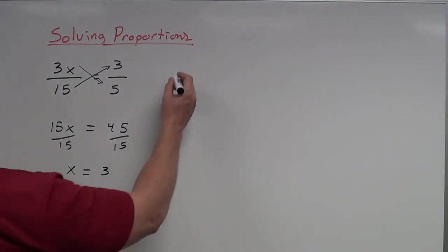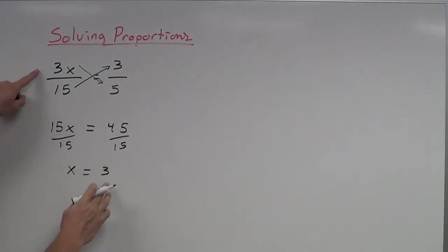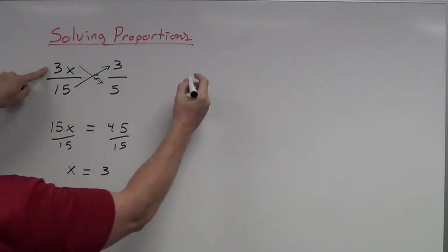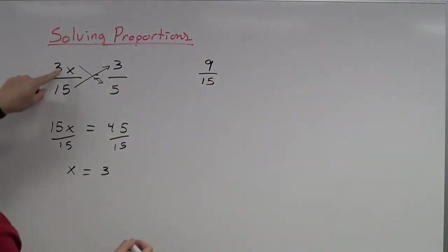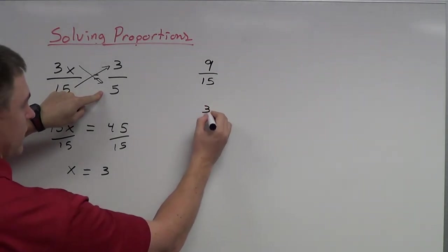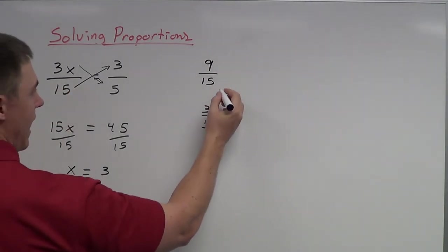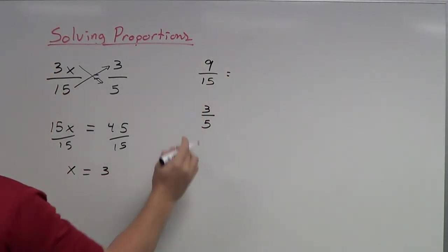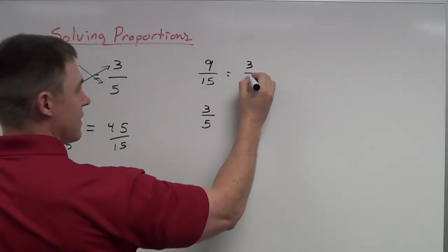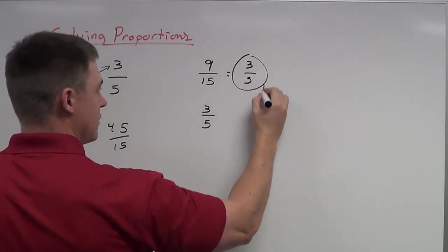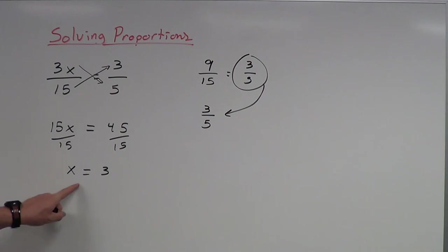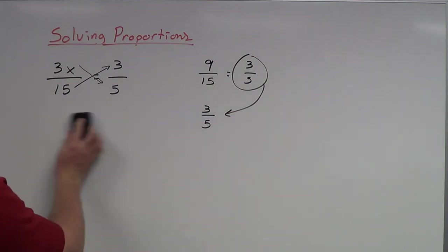Again, you can check this to see if you did this correctly. If I plug it back in, 3 times 3 is going to be 9 over 15. And I'm also comparing 3 over 5. Well, actually what you can do, this 9 over 15, you can reduce that to 3 fifths. So these two fractions are indeed the same. That tells me that that solution is actually accurate. I did get the right answer. Let's do one more.